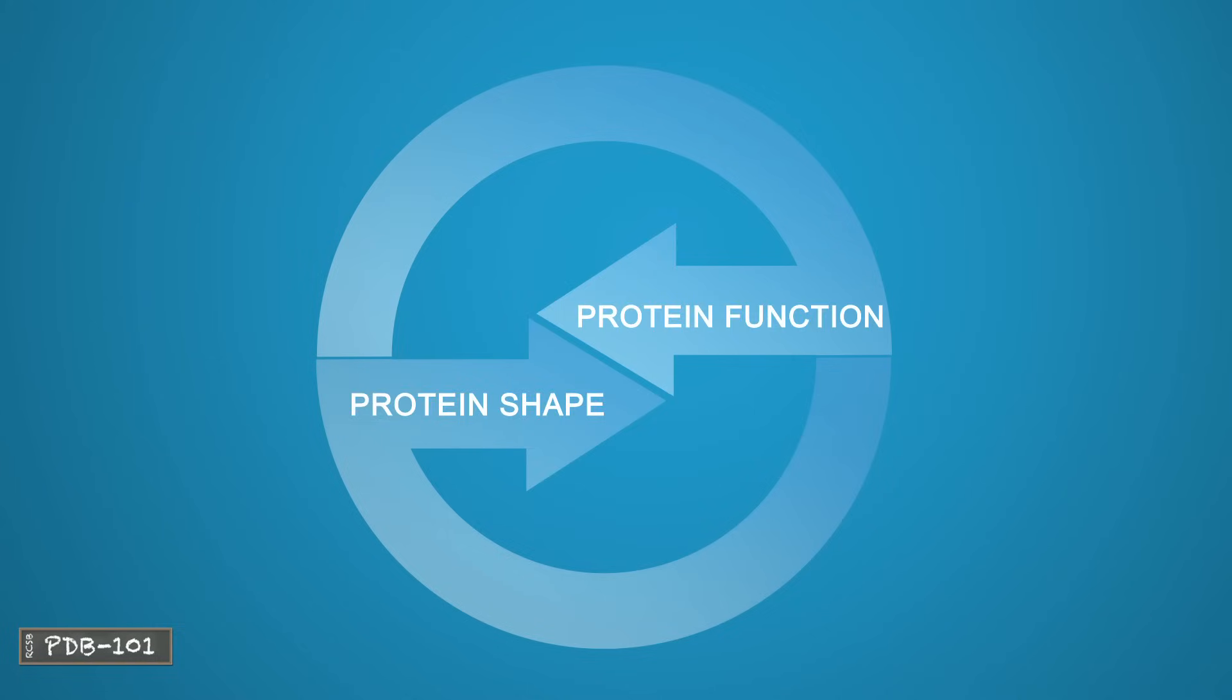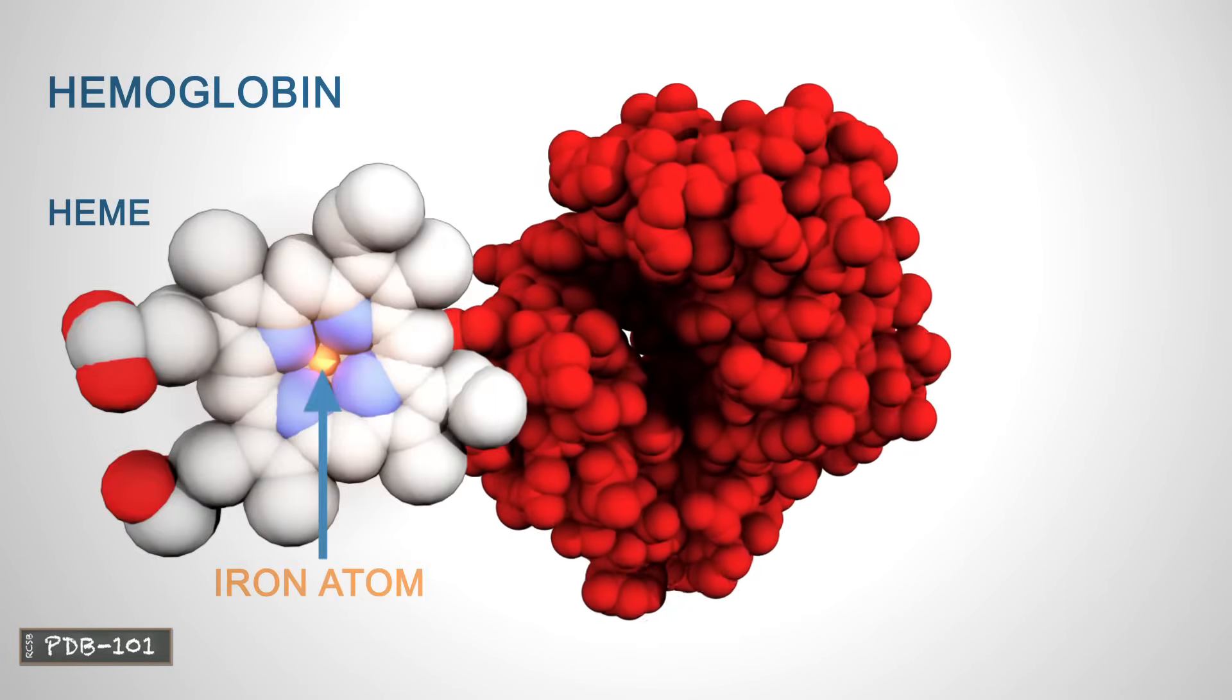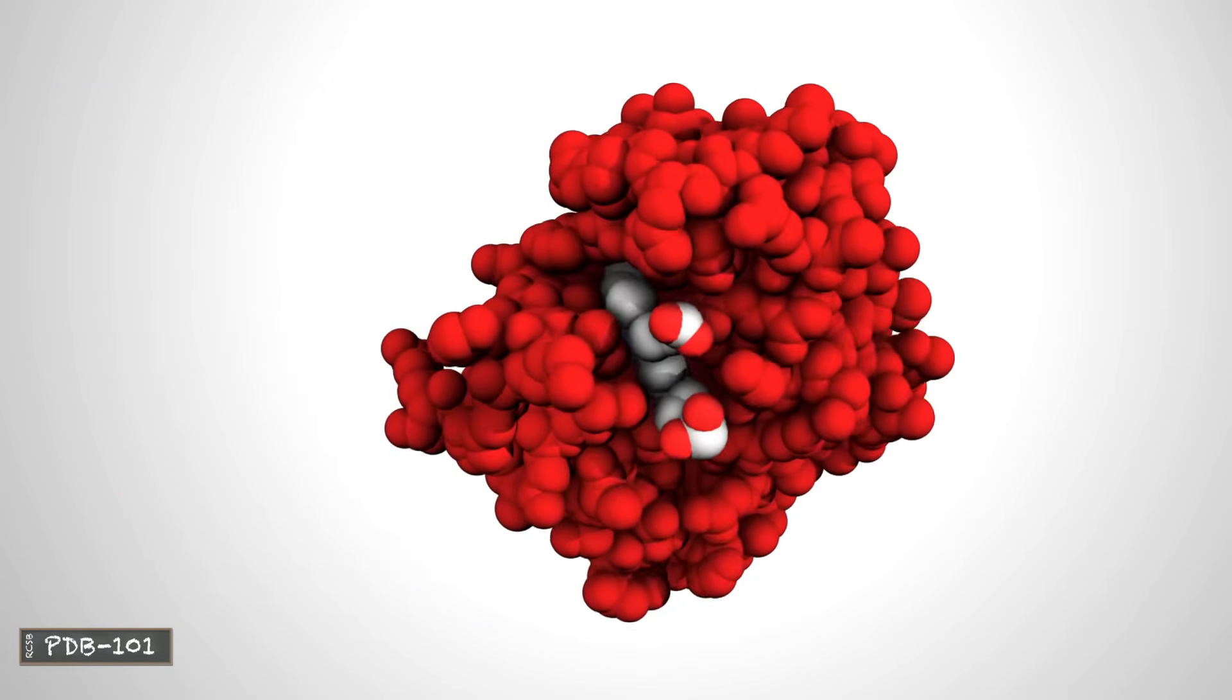The functions of many proteins rely upon their three-dimensional shapes. For example, hemoglobin forms a pocket to hold heme, a small molecule with an iron atom in the center that binds to oxygen.